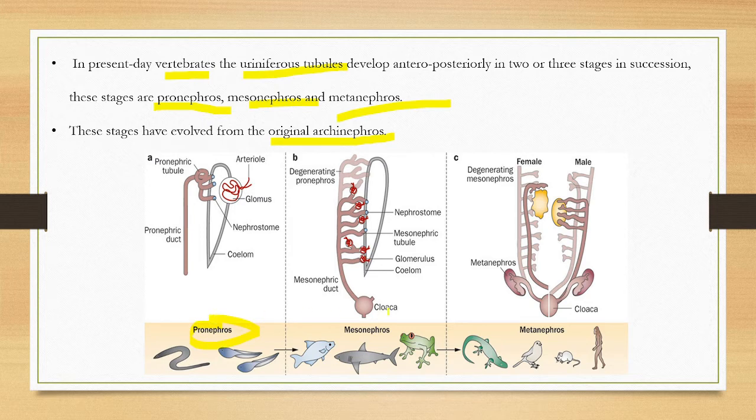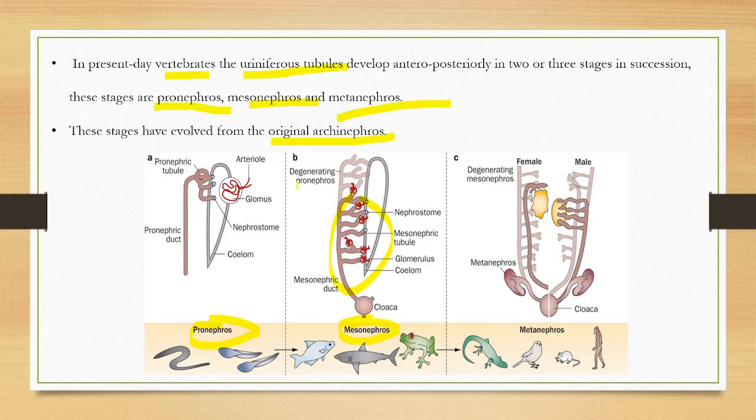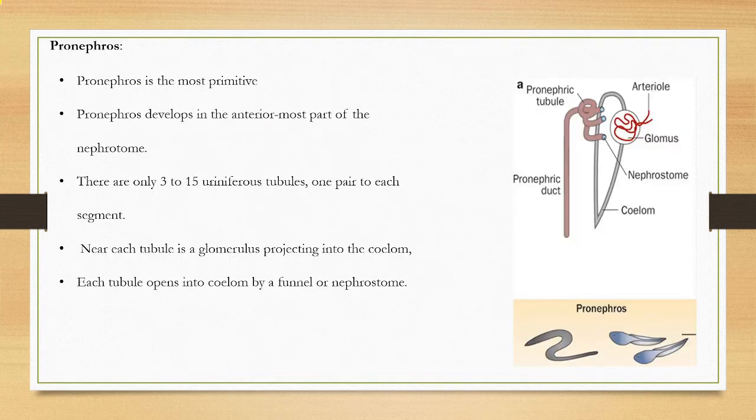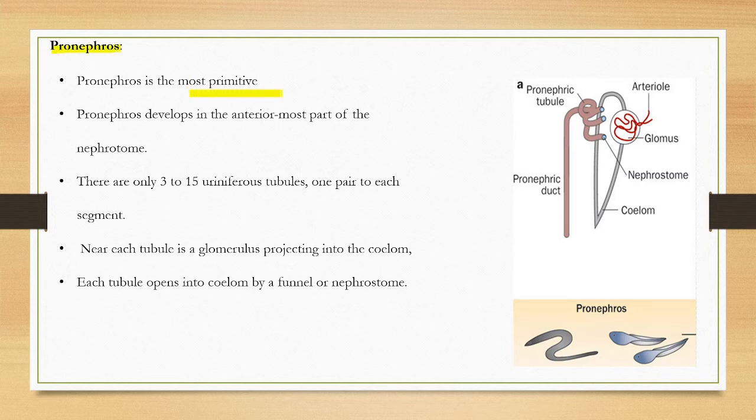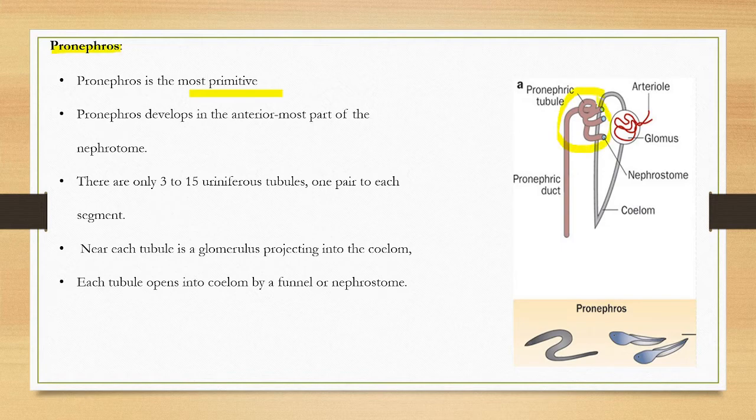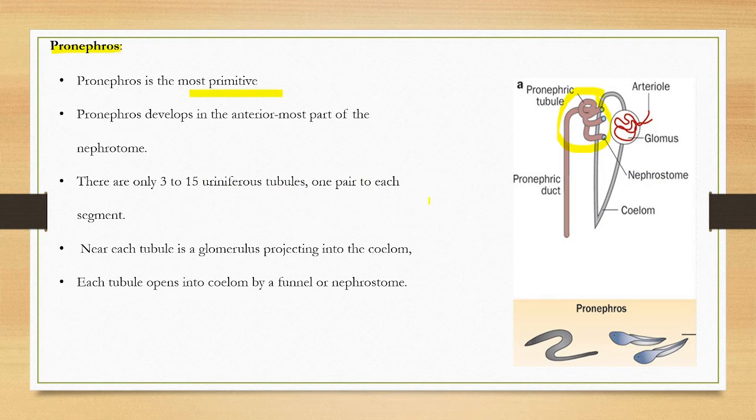The pronephric kidney is the most primitive one. It develops from the anterior most parts of the nephrotome. There are only 3 to 15 uriniferous tubules, one pair to each segment.